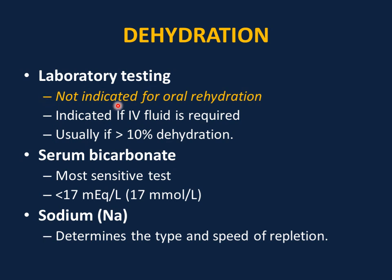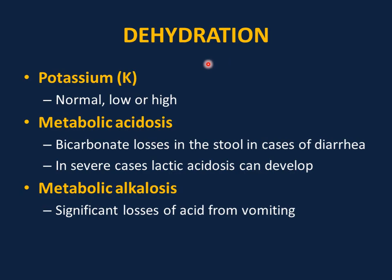Laboratory testing for dehydration is not indicated for outpatients managed with oral rehydration. It is indicated if IV fluid is required, usually if dehydration is more than 10%. The most sensitive test to evaluate is the serum bicarbonate — a level less than 17 is an excellent predictor of moderate to severe dehydration. Sodium level is very important to identify the appropriate IV fluid and rate. Potassium level is generally low in dehydration, but the lab value may appear normal, low, or high, which does not reflect the actual body potassium content.